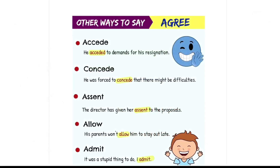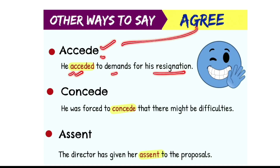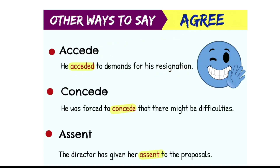Hi. Other ways to say agree. Haan, raji, agree. For example, ek shabd hota hai — exceed. He exceeded to demands for his resignation. Kind of agree hua hai to demands for his resignation. That is exceed.